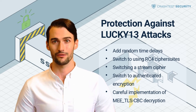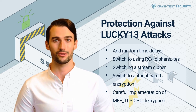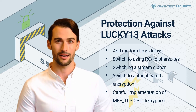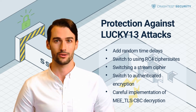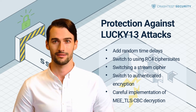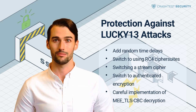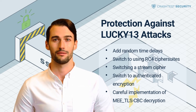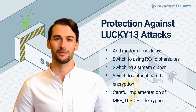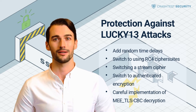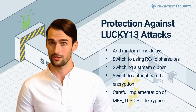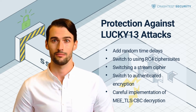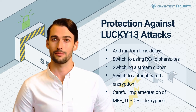However, RC4 has certain cryptographic weaknesses when used in TLS that must be accounted for. RC4, when used in TLS, contains single-byte biases which are not discarded before the encryption. This allows for remote attacks to be conducted, such as the Bar Mitzvah attack. For this reason, switching to RC4 is also only a temporary fix for the Lucky 13 vulnerability.